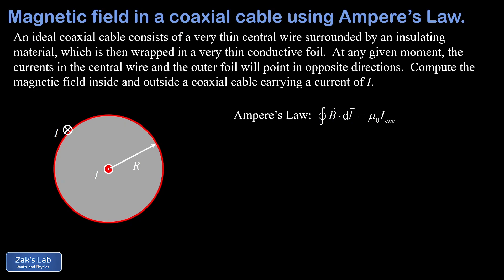Now we can define an Amperian loop inside this cable and we'll give that a radius of little r. Using the right-hand rule, we place the thumb of our right hand in the direction of the central current, and our fingers curl counterclockwise, indicating that we should expect a counterclockwise swirling magnetic field in here. We didn't consider the current in the foil because that current is not enclosed in the Amperian loop.